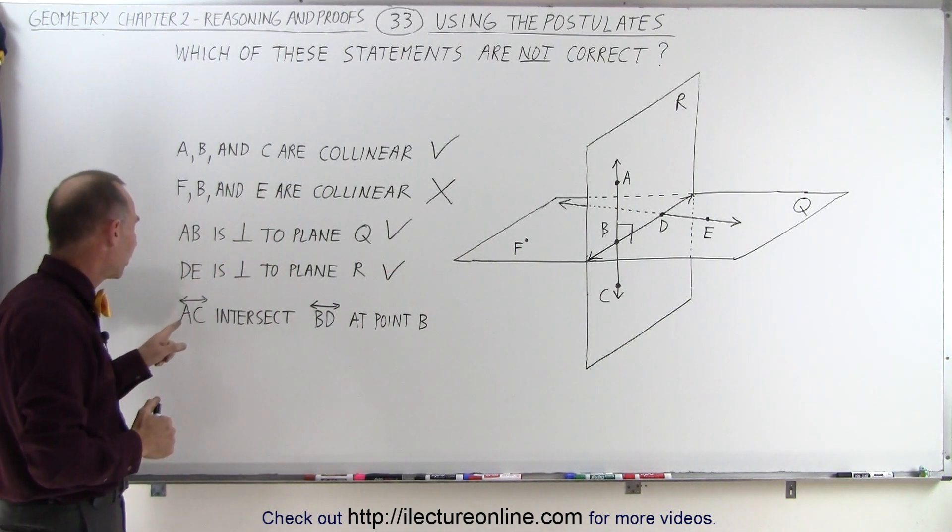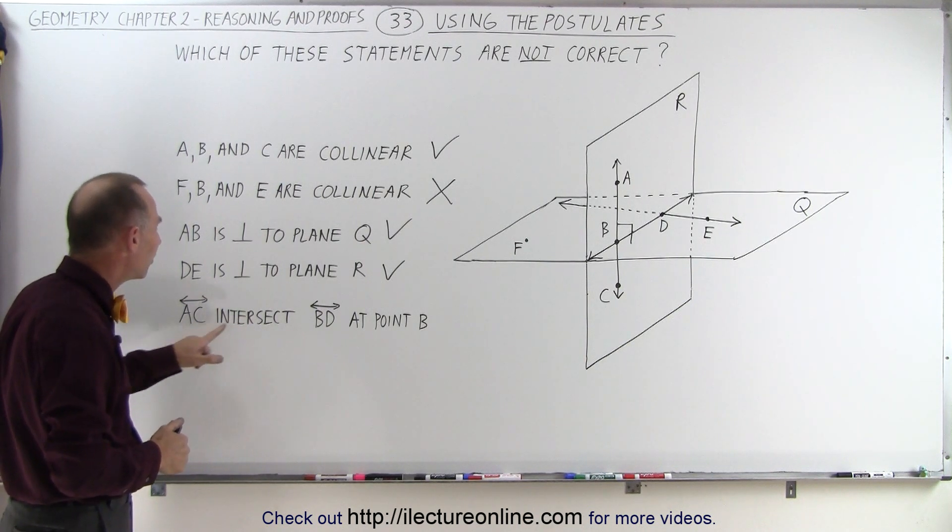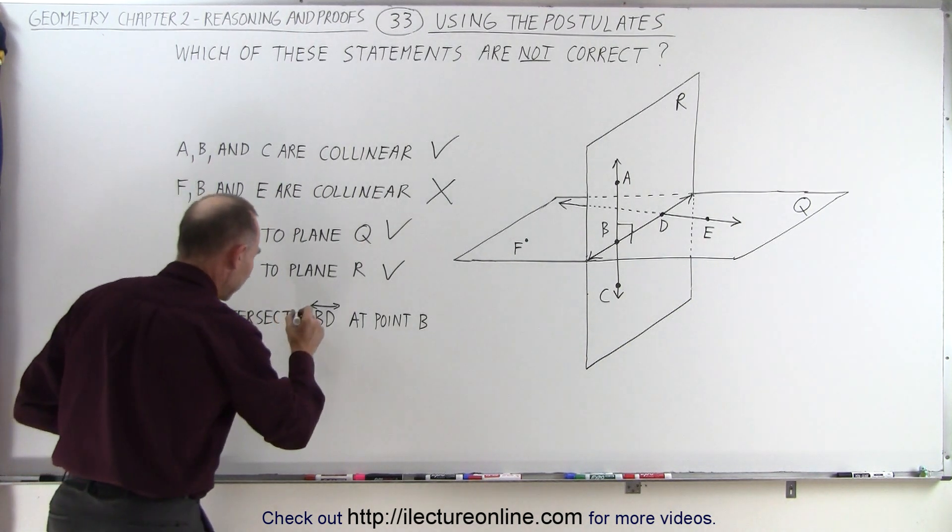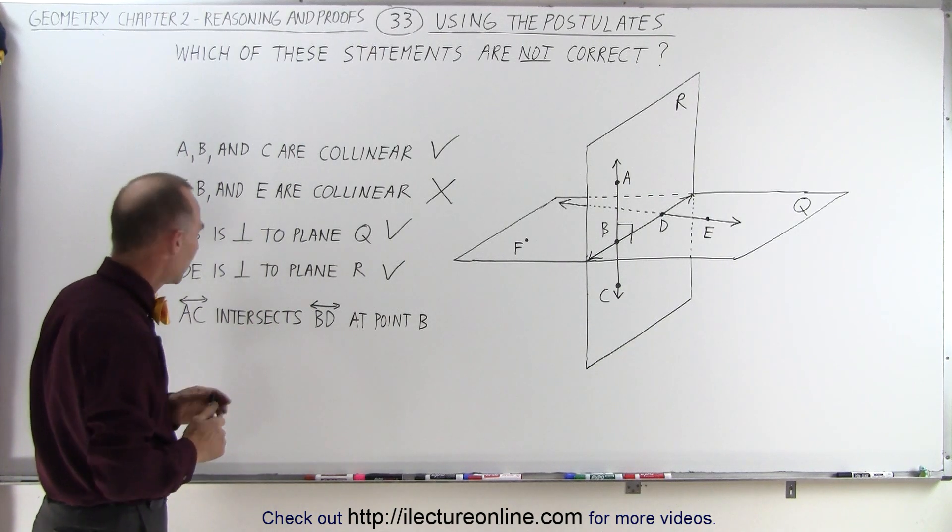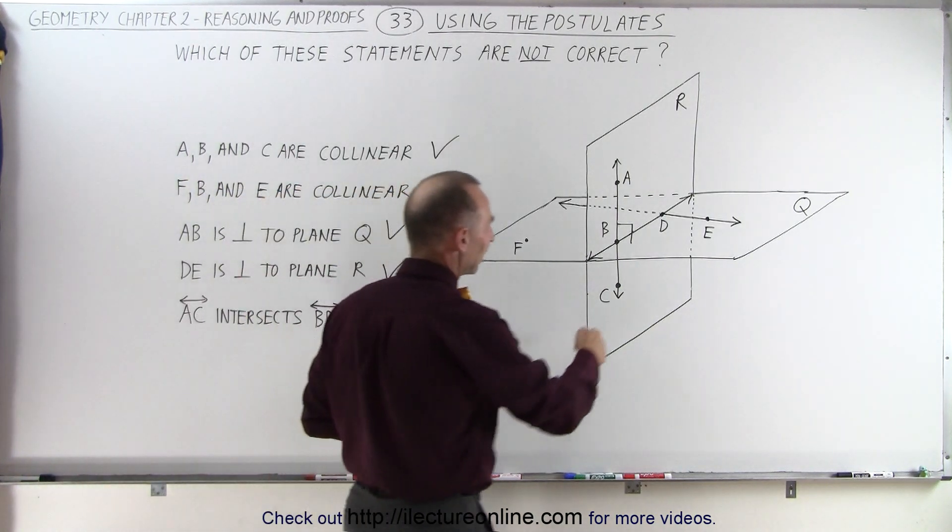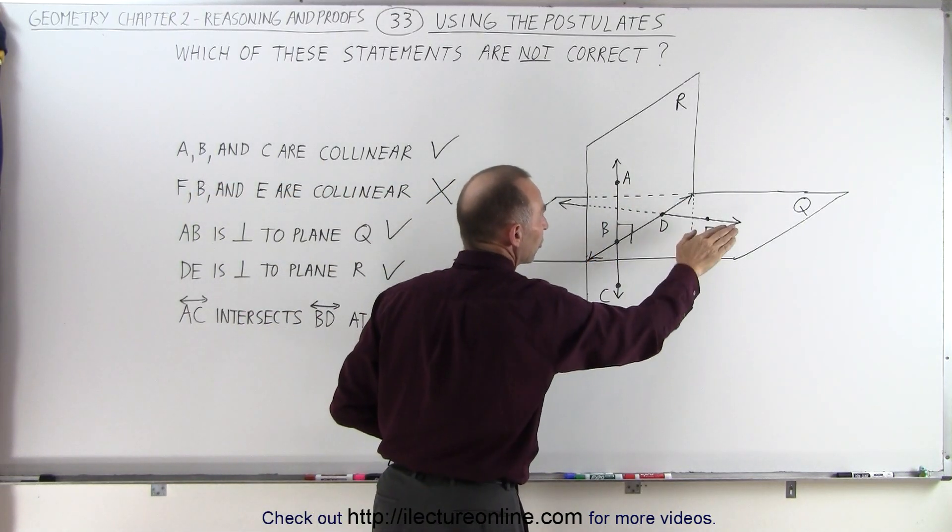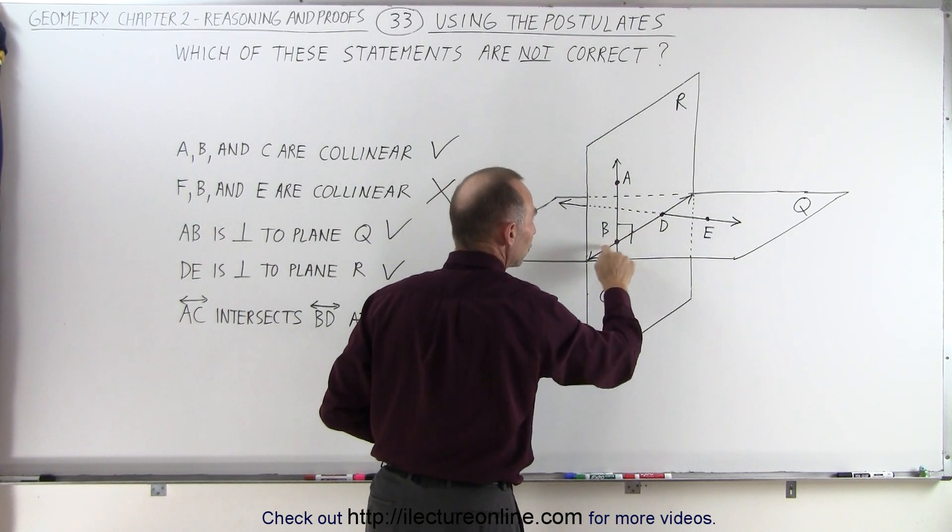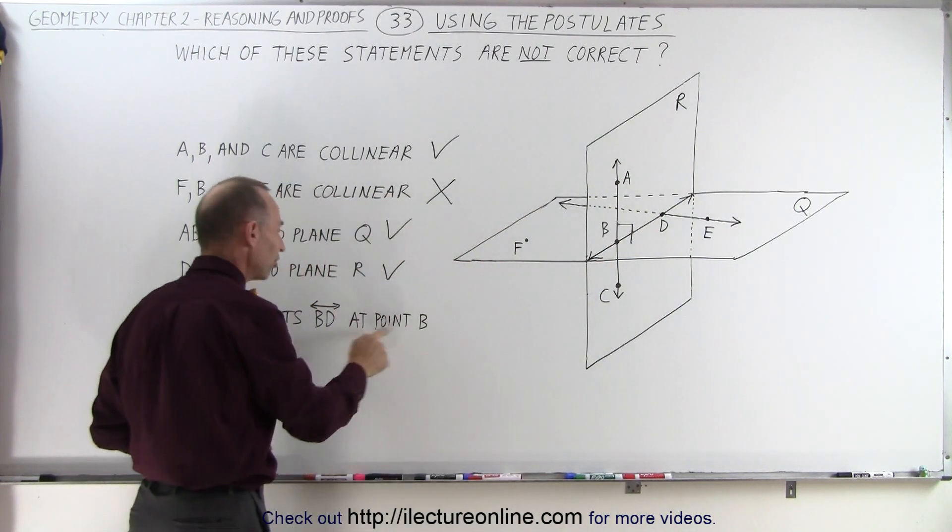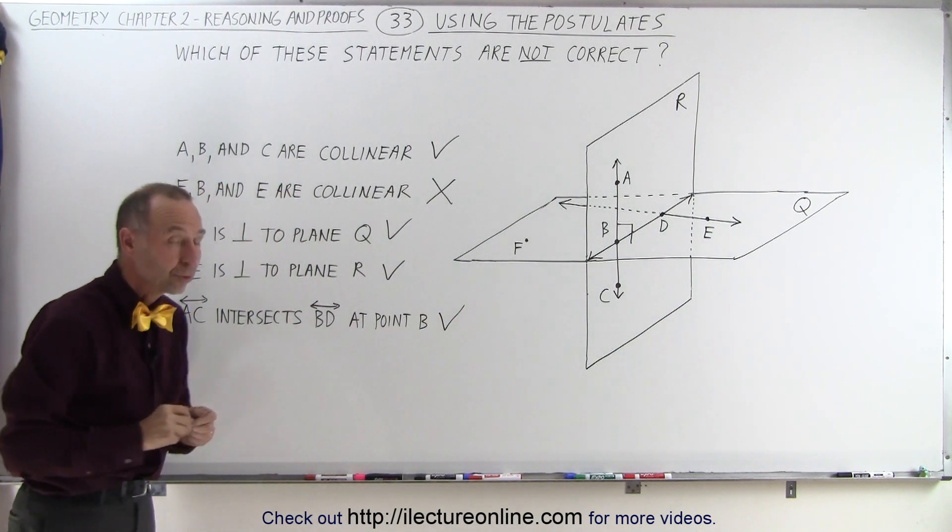And finally we have line AC intersects line BD at point B. Well let's look at line AC, that's this line right here, and we look at line BD which is the line where we have an intersection between plane R and plane Q, and notice they intersect at this point right here, which is at point B. So again, that appears to be a true statement.